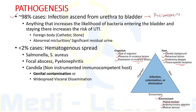The bottom line is that anything increasing the likelihood of bacteria entering the bladder and staying there increases the risk of UTI. Foreign bodies like catheters or renal stones provide inert surfaces for bacterial colonization. Abnormal micturition and significant residual urine also promote infection. In less than 2% of cases, infection occurs due to hematogenous spread from bacteremia, caused by relatively virulent organisms such as Salmonella and Staphylococcus aureus. Hematogenous infection may produce focal abscesses or areas of pyelonephritis and will result in a positive urine culture.